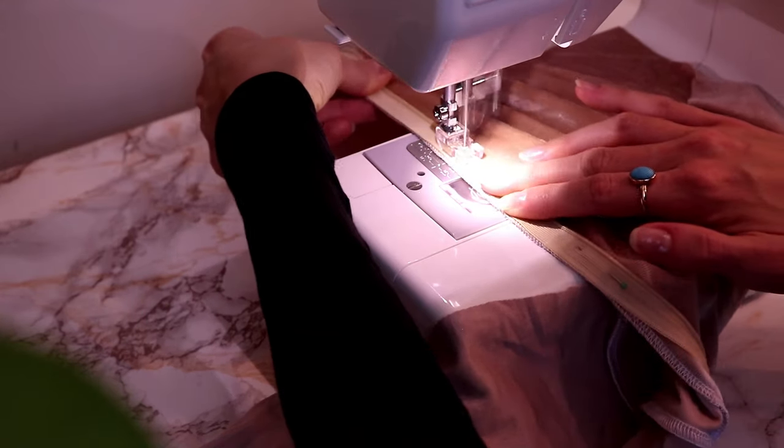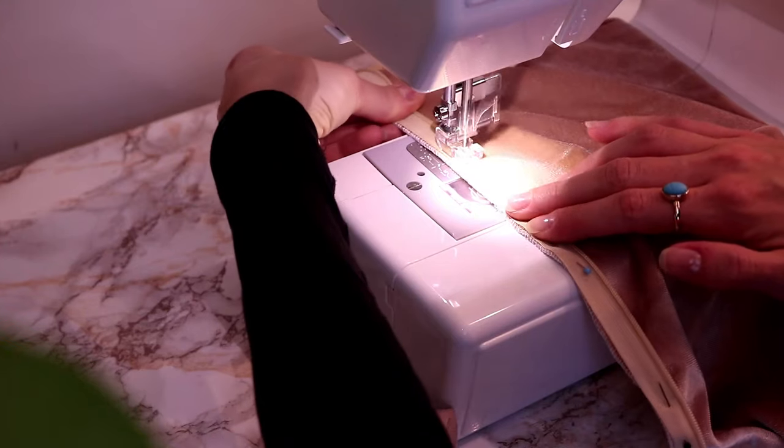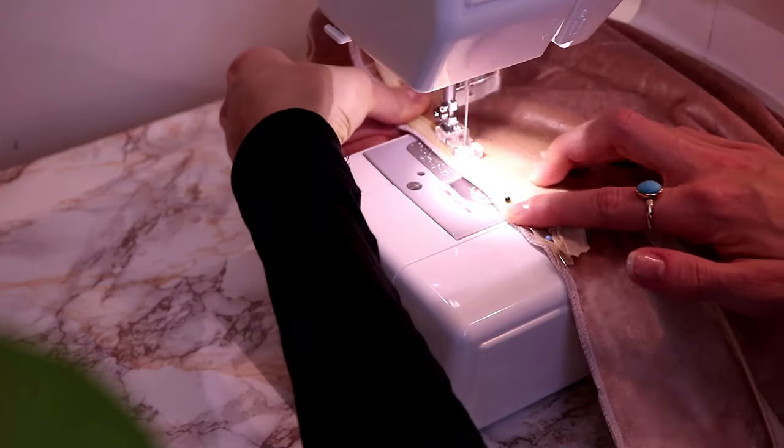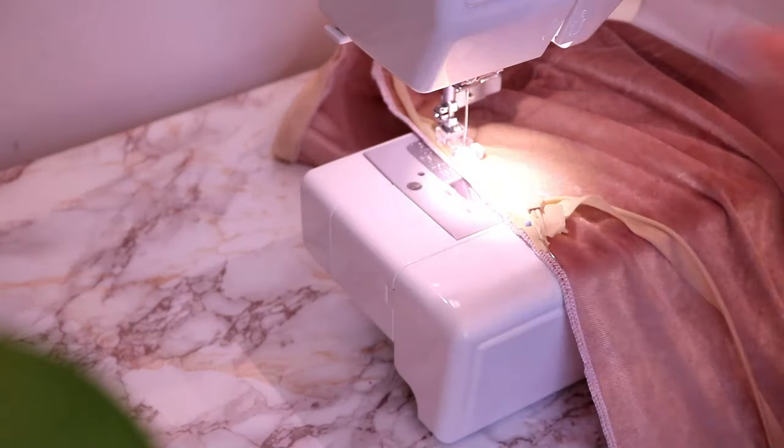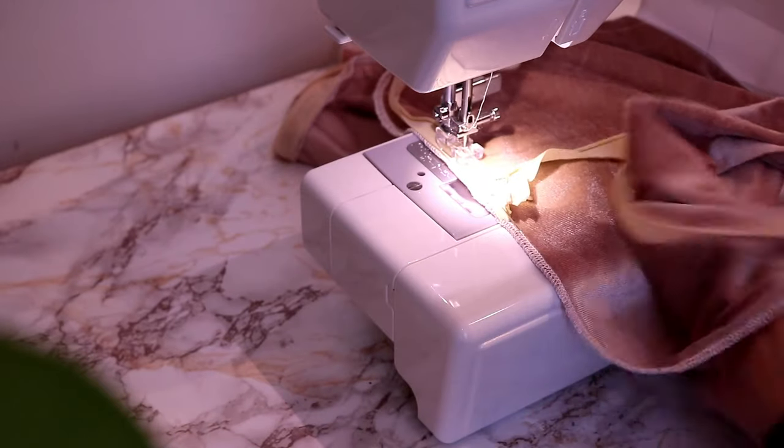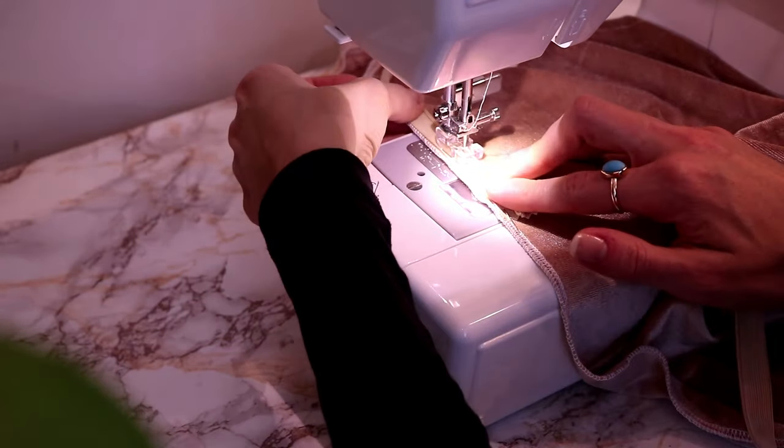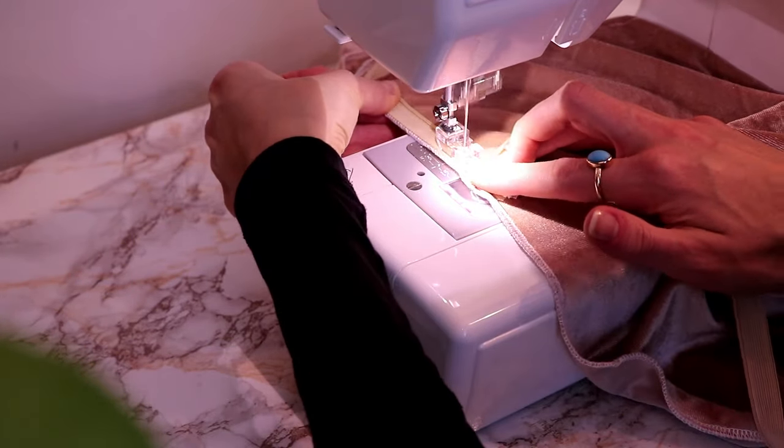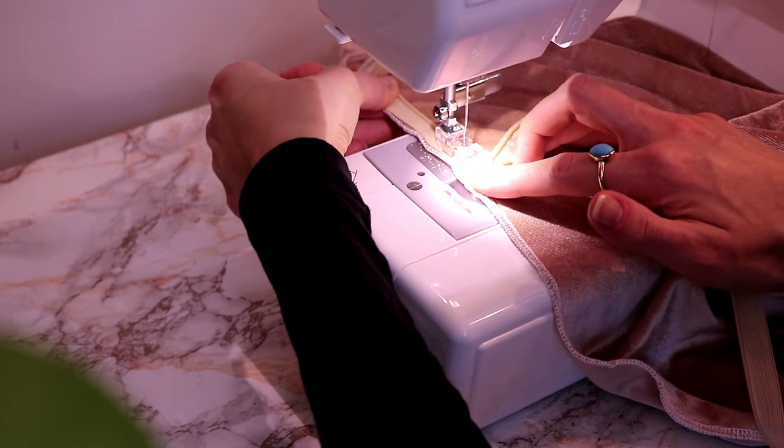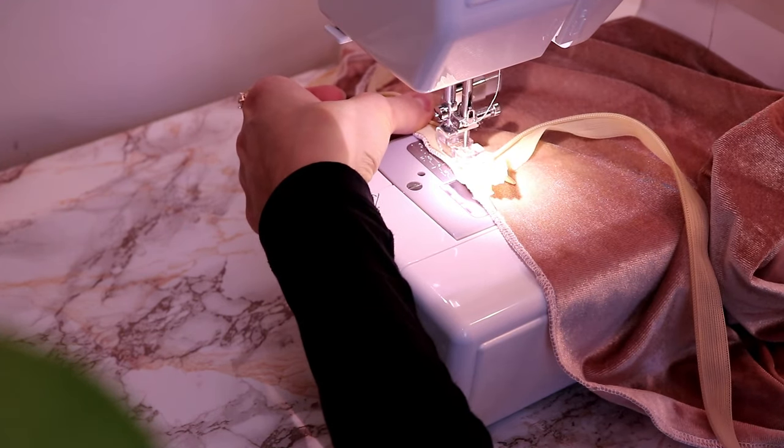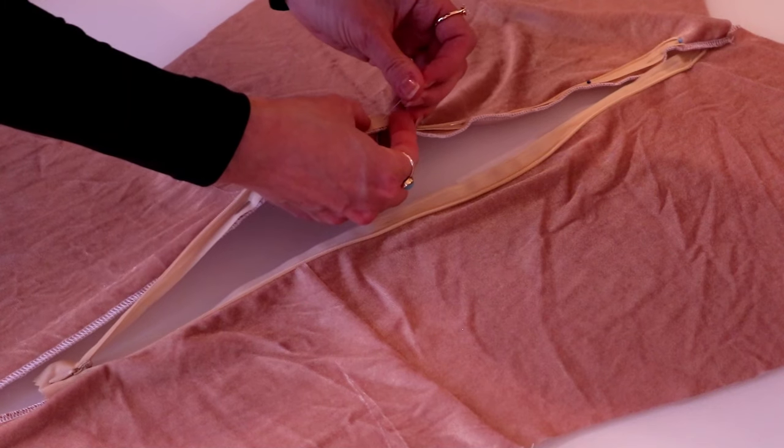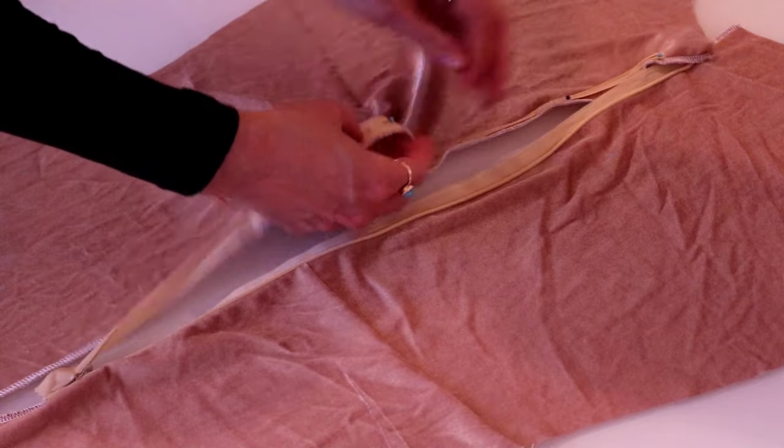Now stitch the open zipper close to the zipper teeth, starting at the top edge and finishing at the zipper pull. Backstitch at the beginning and the end. For best practices use an invisible zipper foot. This is not necessary but makes sewing invisible zippers a lot easier. Go through the same steps for the other side of the zipper.